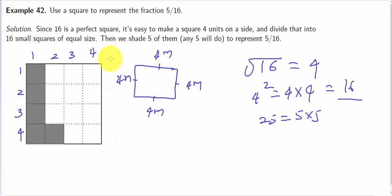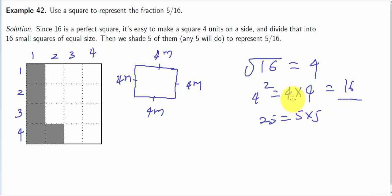We have 5 rows and 5 columns. So 5 into 5 is 25 — that is a perfect square. Then 6 into 6, 7 into 7 — if we multiply the same digit, we get a perfect square. So 4 into 4 gives us a perfect square.